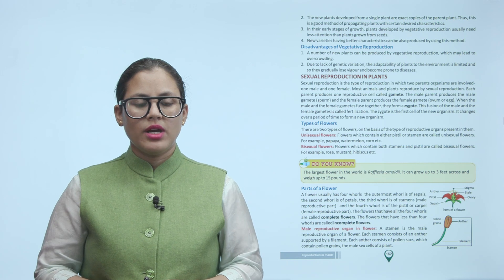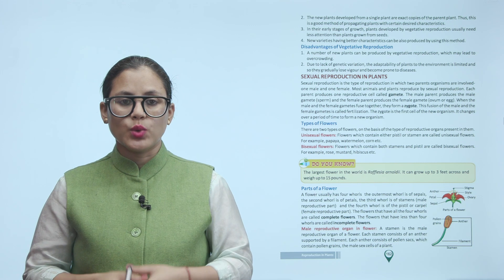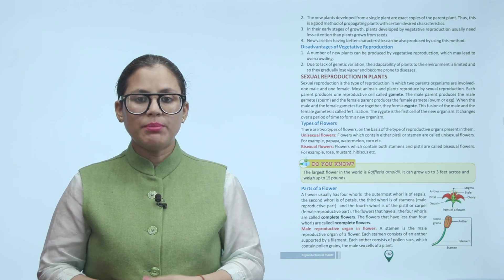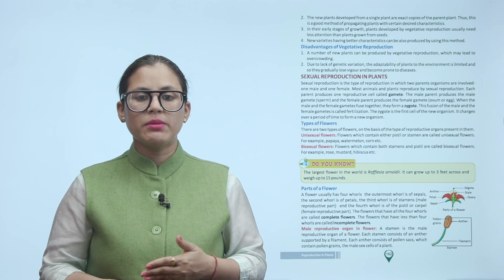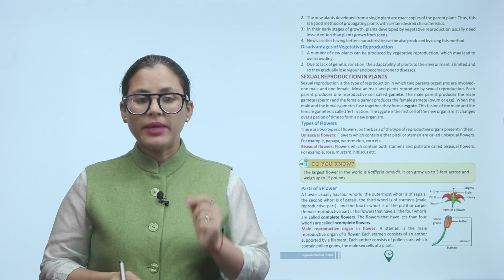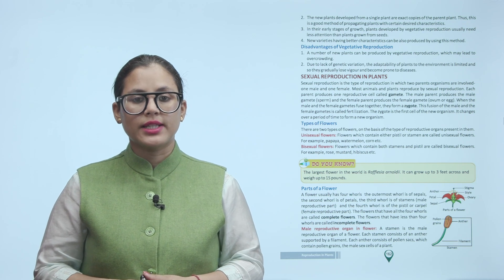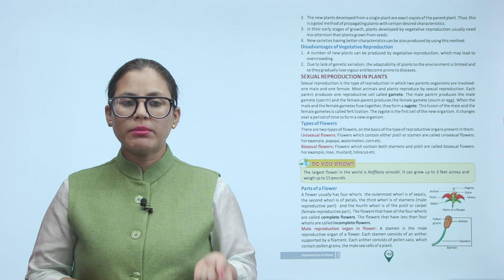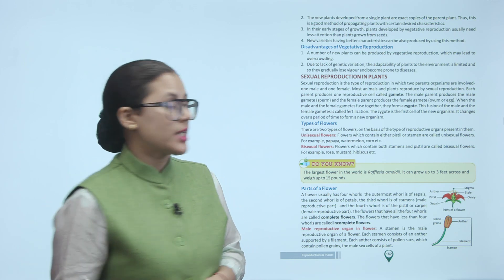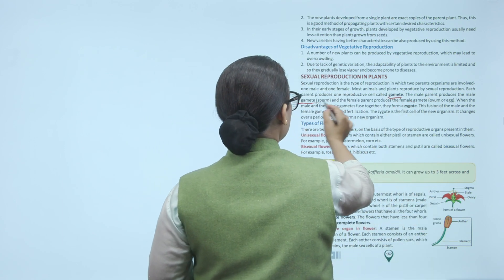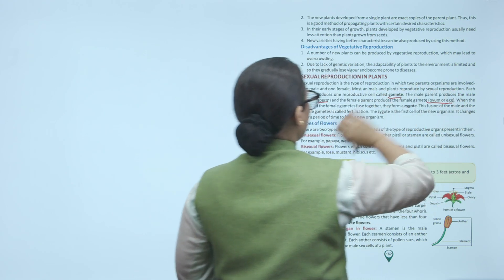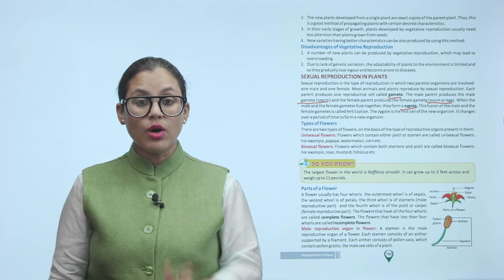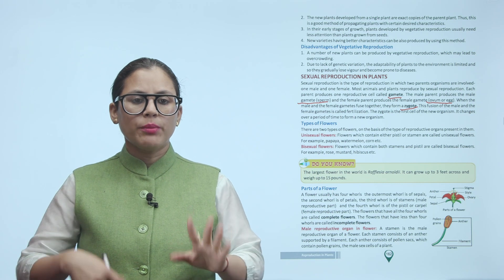Sexual reproduction in plants: Sexual reproduction involves two parent organisms — one male and one female. Each parent produces one reproductive cell called a gamete. The male parent produces the male gamete (sperm) and the female parent produces the female gamete (ovum or egg). When the male and female gametes fuse together, they form a zygote. This fusion is called fertilization. The zygote is the first cell of the new organism and develops over time into a new organism.